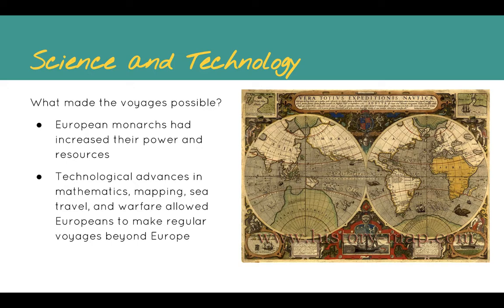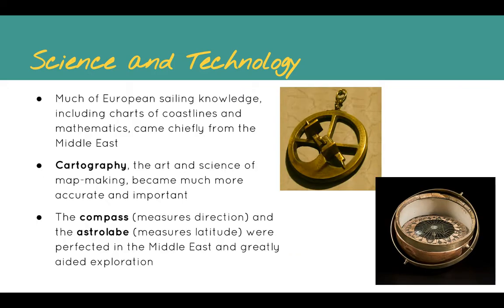Much of European sailing knowledge, including charts of coastlines and mathematics, came chiefly from the Middle East. For example, cartography — the art and science of map making — became much more accurate and important, and some of the best maps in the world were developed by Middle Eastern explorers. The compass, which measured directions, and the astrolabe, which measures a person's latitude based on the position of the sun, moon, and stars, were perfected in the Middle East. Europeans basically borrowed what already worked and then sought to improve it.